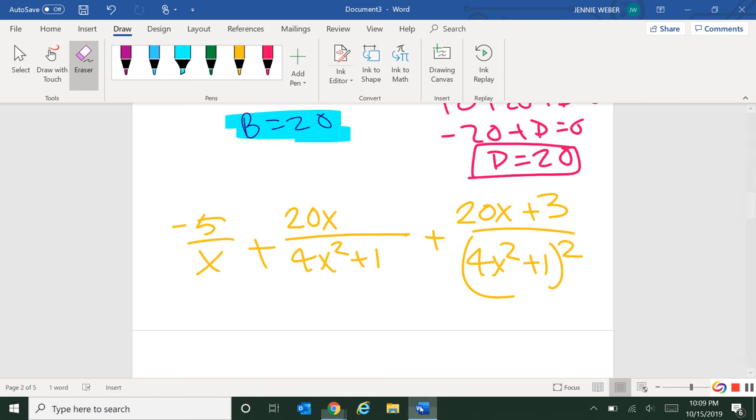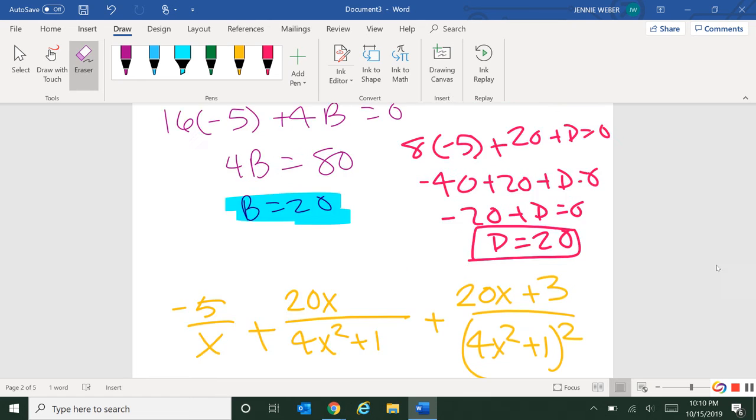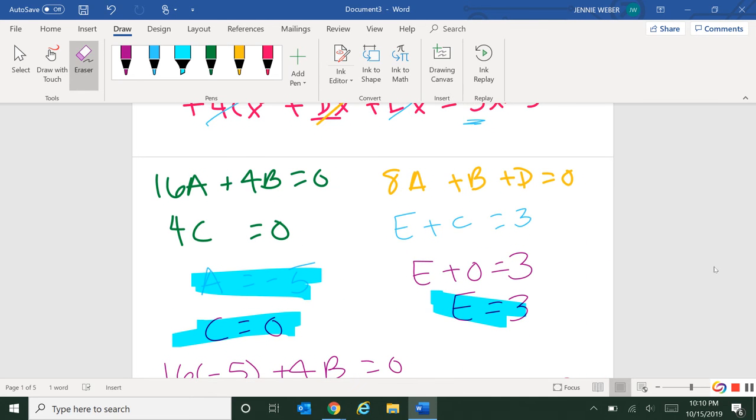So definitely messy. You could have done this by setting stuff equal to x, but I would say that probably it is easier to equate equations. Now, at this point, when I had this system, I solved the system manually. I already knew A, I knew C, I could easily see it. I already had two of the three.